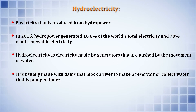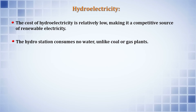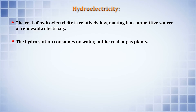Hydroelectricity is made by generators pushed by the movement of water. It is usually made with dams that block a river to make a reservoir or collect water that is pumped there. When the water is released, the pressure behind the dam forces water down pipes leading to a turbine. In India, we have large amounts of hydroelectricity as well as thermal power plants. Hydroelectricity has low operational costs, making it a very good source of renewable electricity.